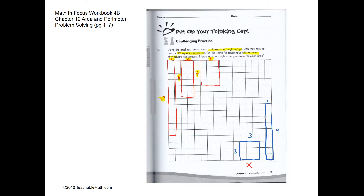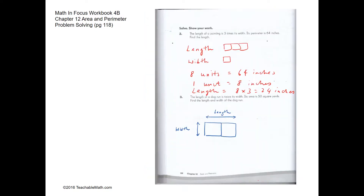We're going to do the same thing but now with an area of 9 square centimeters. So 1 and 9 will give us 9 square centimeters, and 3 and 3 will also give us 9 square centimeters. But in this case, this is not a rectangle — this is a square — so this is not a valid answer.